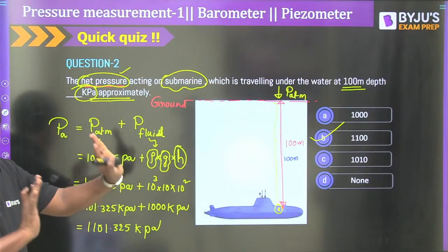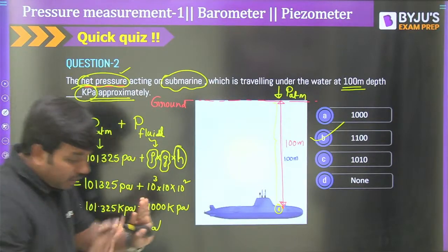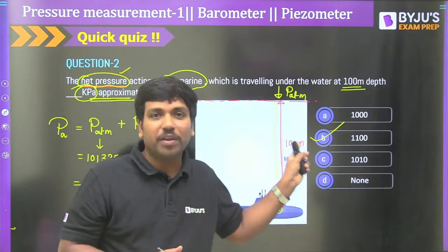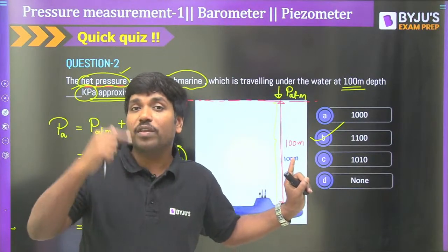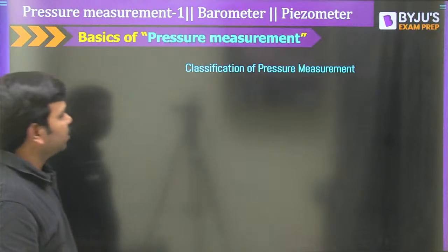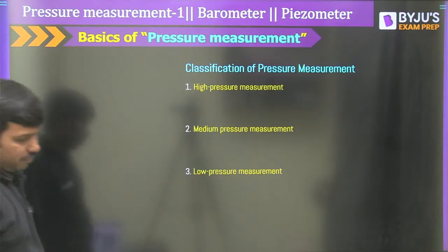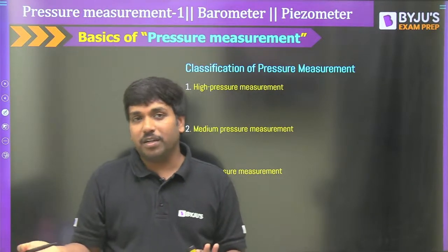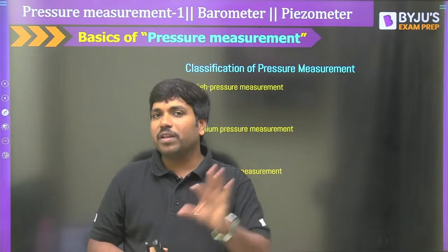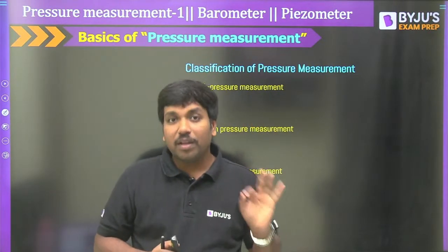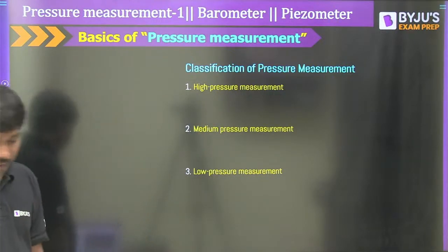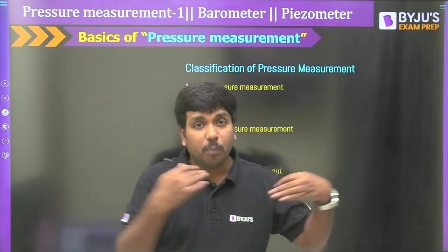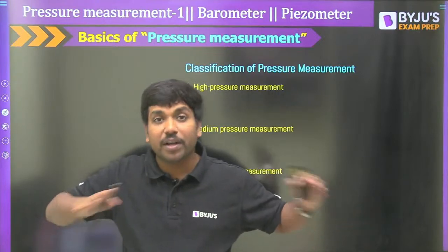Moving ahead to classification of pressure measurement. In industries — process and semiconductor — you will be asked to classify pressure in three ways: high pressure, medium pressure, and low pressure. The techniques, mechanisms, and sensors we adopt are different for different pressure ranges. We cannot use the same sensor for all ranges.